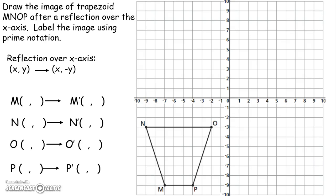Draw the image of trapezoid MNOP after reflection over the x-axis. Label the image using prime notation. So again, to reflect over the x-axis, we're going to remind ourselves the x coordinate stays the same and the y coordinate changes sign. So I'm going to go ahead and first take a look at our original M. There's our original M. So the coordinates of the original M are negative 7, negative 9.